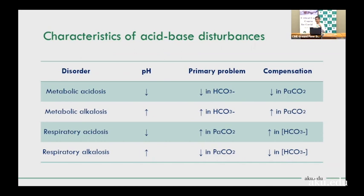Step six: assess oxygenation using PO2/FIO2 ratio. In ABG samples, three values are directly measured: pH, PCO2, and PO2. All other values are calculated. To calculate PO2/FIO2 ratio — if the patient is on face mask oxygen at 10 liters, maximum FIO2 is 0.45–0.6; using an average of 0.5, a PO2 of 100 gives a ratio of 200, indicating moderate ARDS.